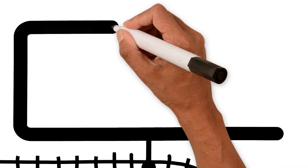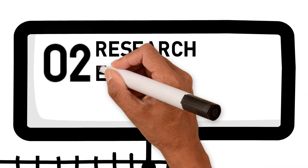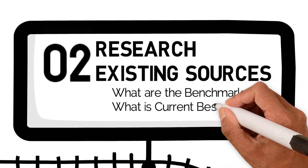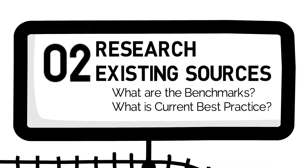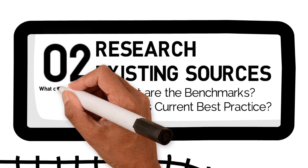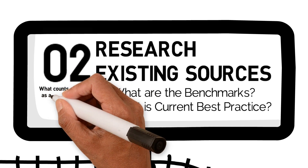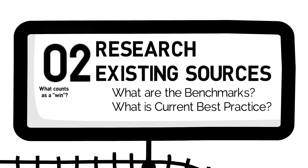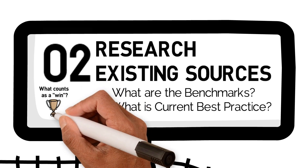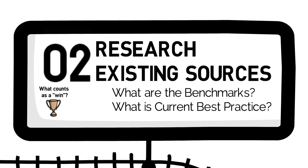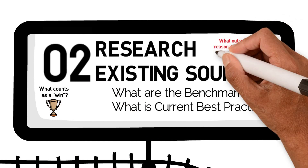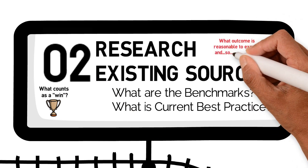Step two is to research existing sources. The key words here are benchmark and current best practice. Without knowing what is going on in your industry, how do you know what's good, normal, or bad? And how do you know whether something is a priority for innovation, or it's chugging along just fine? Most importantly, how do you know what outcomes to expect in order to determine the amount of time, money, and energy you invest?